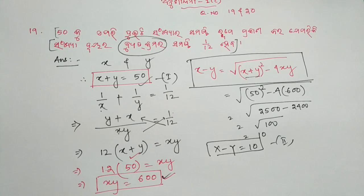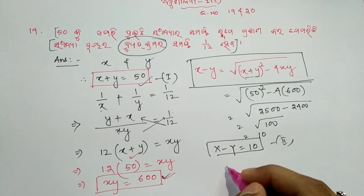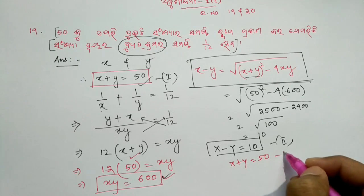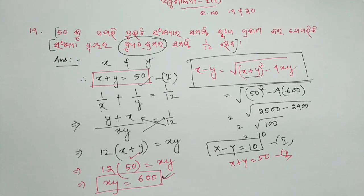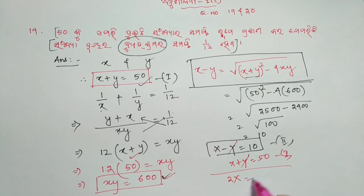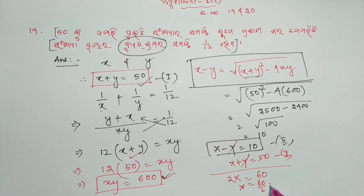x plus y is x plus y, x minus y is 10. So this is the answer. We can solve: y plus y cancels out, x plus x is 2x, 10 plus 50 is 60, so we can solve.